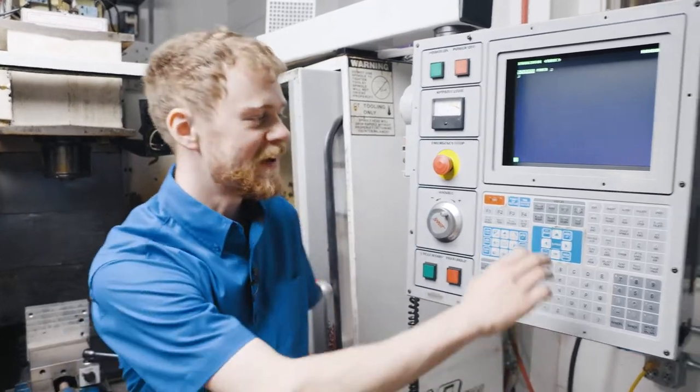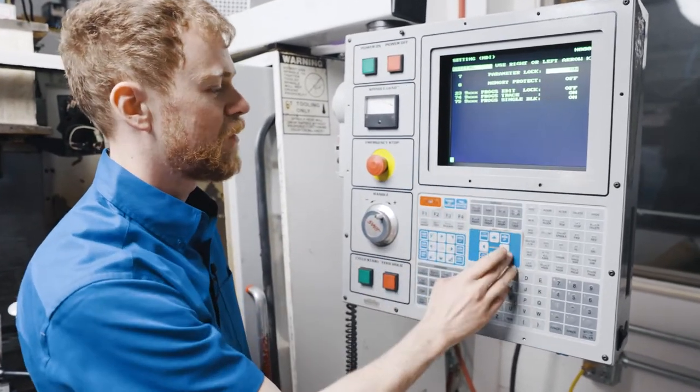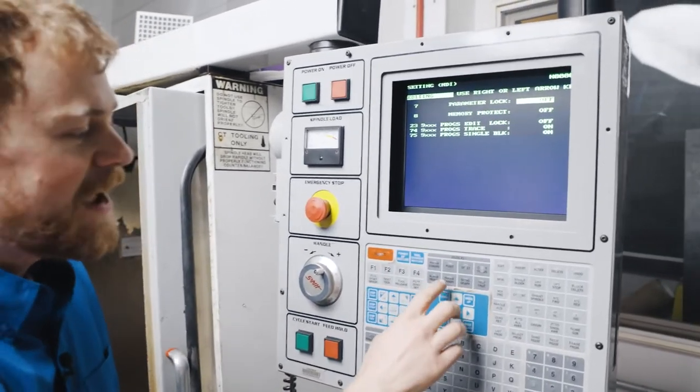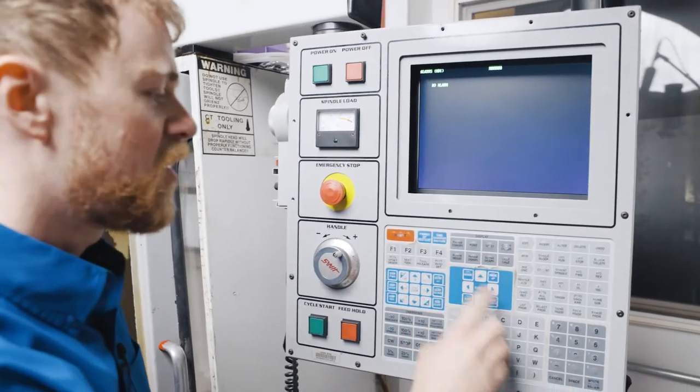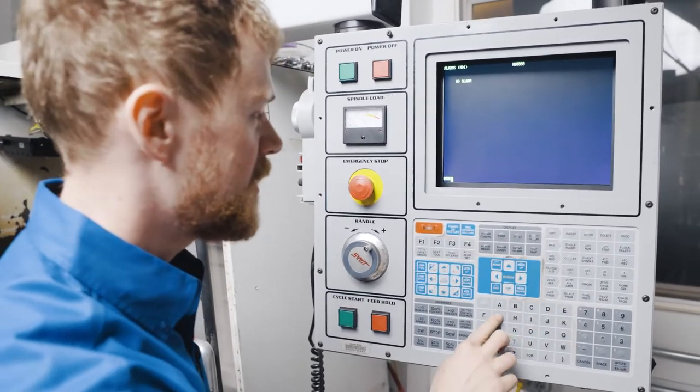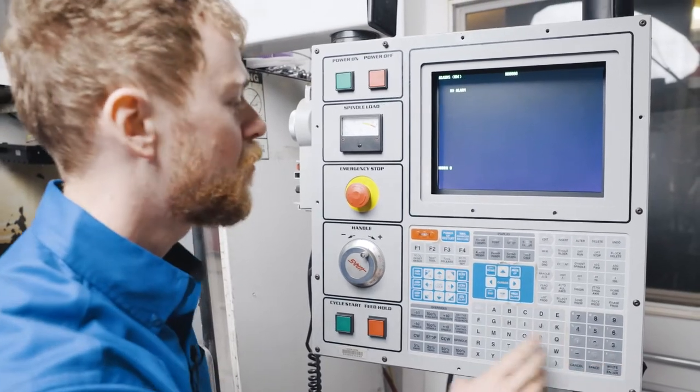To do that, the first thing you need to do is go to setting 7 and turn the parameter lock off. Then enter service mode by pressing the alarms page and typing the word debug, D-E-B-U-G. Press enter.